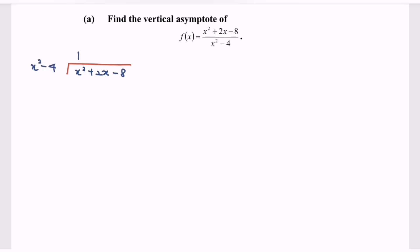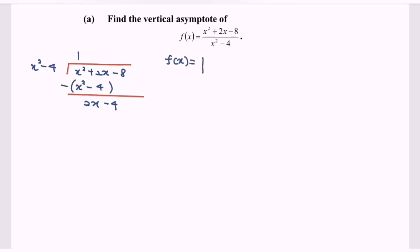Substitute 1. We will have x² - 4 in the bracket. Simplify the situation and we will have 2x - 4, because we have -8 plus 4, so we will have -4. So this will be the proper fraction. Kindly express the situation: f(x) = 1 + (2x - 4) / (x² - 4).